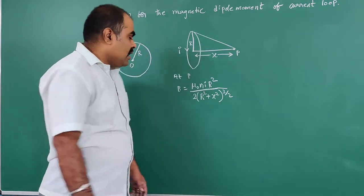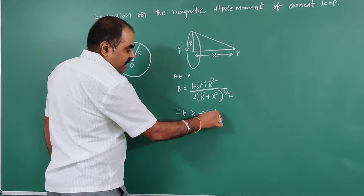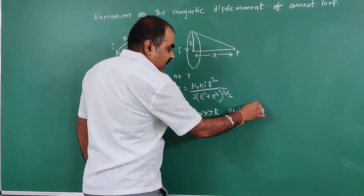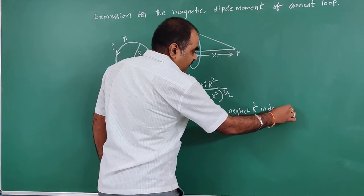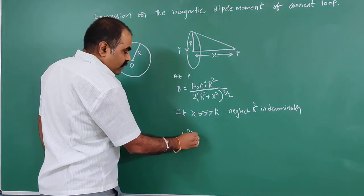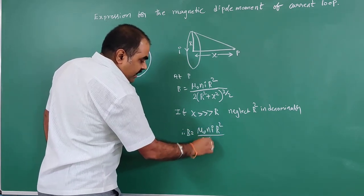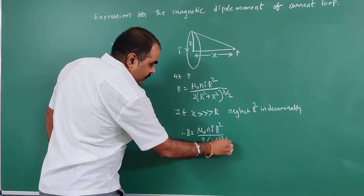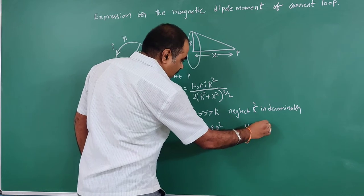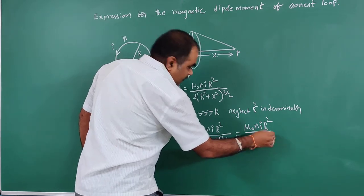This is a fundamental formula. Now, if X is much greater than R, we can neglect R² in the denominator. Therefore B becomes μ₀NIR² divided by 2(X²)^(3/2), which simplifies to μ₀NIR² divided by 2X³.